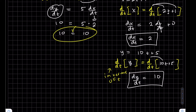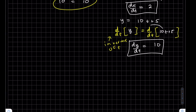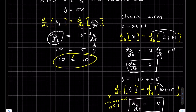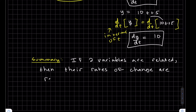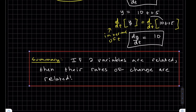So we've just shown that if two variables are related, then the rates of change are related. If we have two variables that are related, their rates of change are related. That's the concept of how we're going to be solving these word problems in this section. We can use one rate of change that's given to find another one that is related.